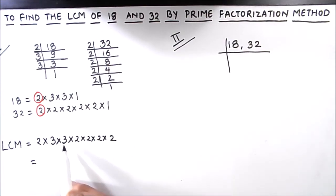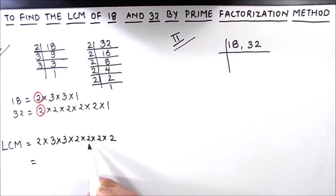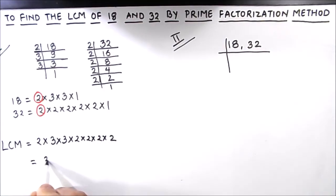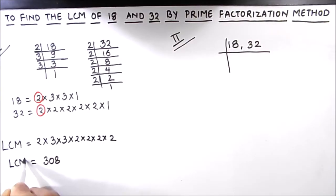So the LCM will be the product of all these numbers: 2 × 3 × 3 × 2 × 2 × 2 × 2. Computing step by step: 2 × 3 = 6, 6 × 3 = 18, 18 × 2 = 36, 36 × 2 = 72, 72 × 2 = 144, 144 × 2 = 288. So the LCM of the two numbers is 288.